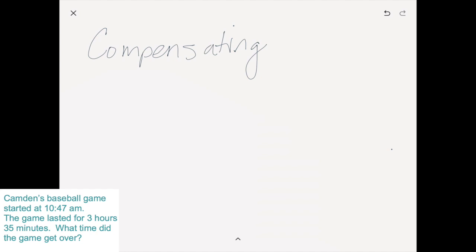So this idea of compensating is when the kids will do something they weren't supposed to do, like they're rounding to make the problem easier, and then they need to come back and compensate for what they did. So the original problem, again, was it started at 10:47 and the baseball game was three hours and 35 minutes. So this is when a kid says, well, 10:47, that's almost like 11 o'clock. That's really close to 11 o'clock. So I'm just going to pretend for a moment it started at 11 o'clock and I'm going to add the three hours and 35 minutes to that. And so then they say that it's 2:35 p.m.